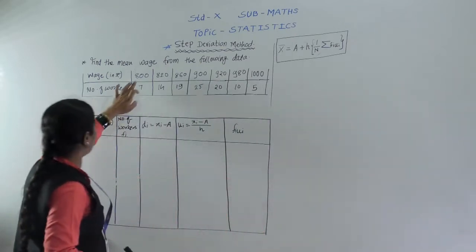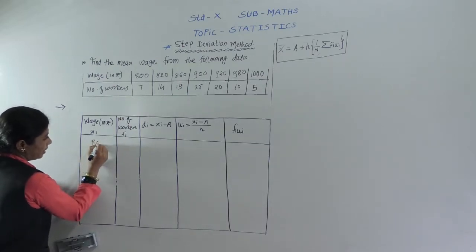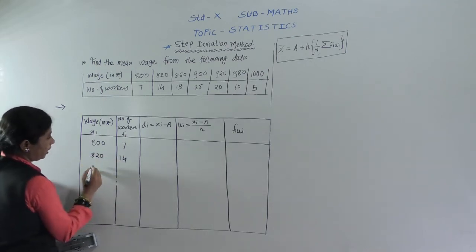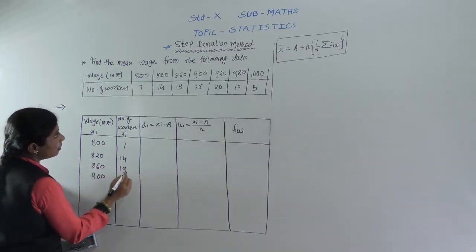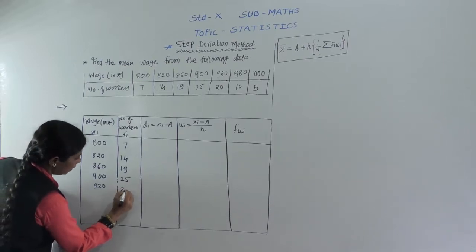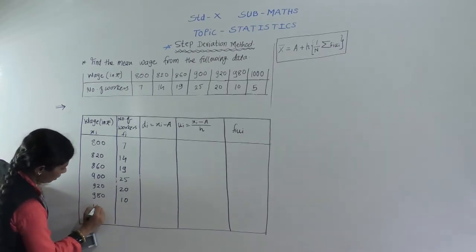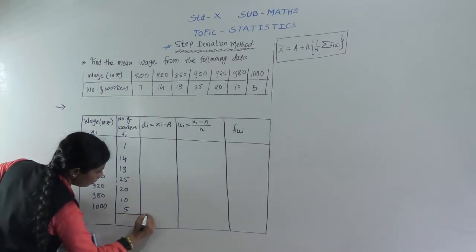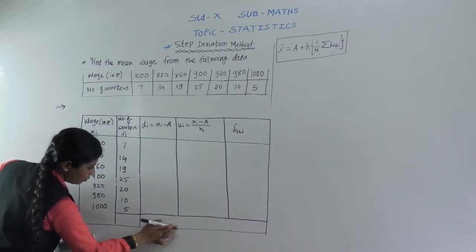Now we will start with the example. We write all the xi values: 800 with 7 workers, 820 with 4 workers, 860 with 9, then 900, 920, 980 with 10, and 1000 with 5 workers. We have to make the summation using the frequency distribution table.